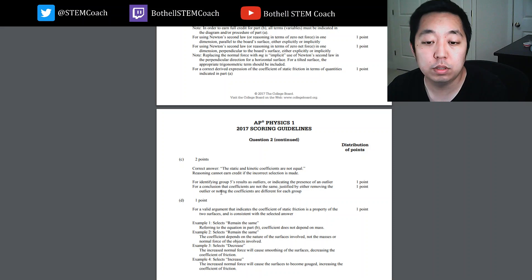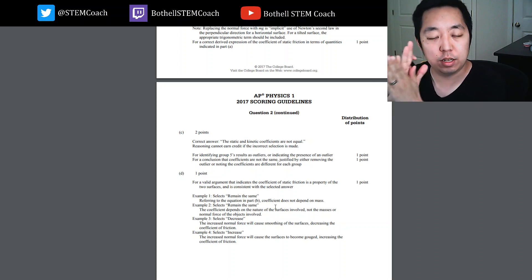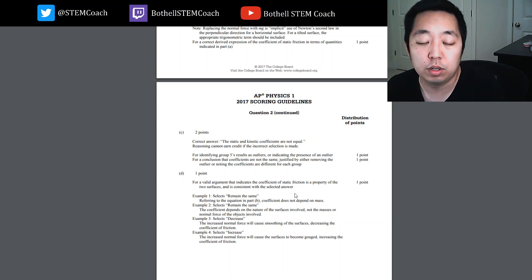Kinetic are not equal. Group five is outlier. That's right. The static friction is a property of two surfaces. That's what I said, the interface. When I said that, the interface is the same. So that's it.